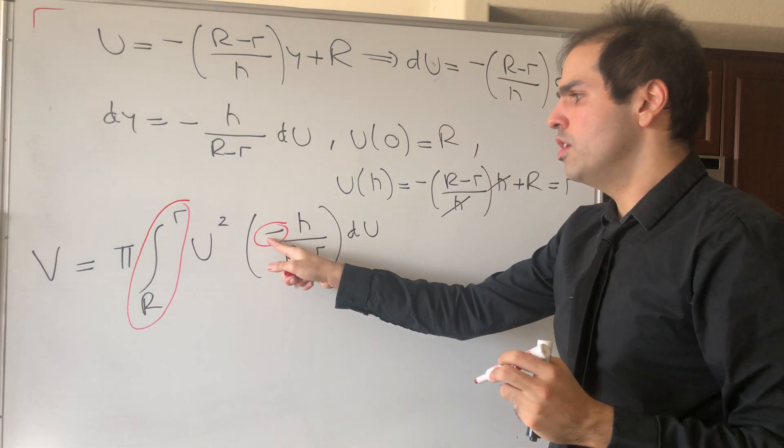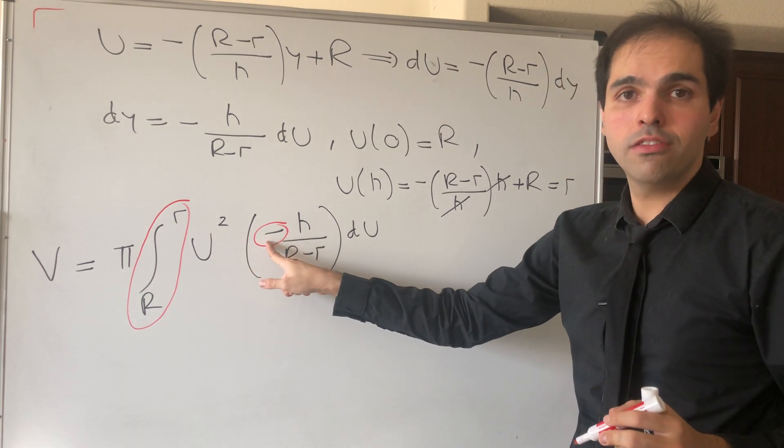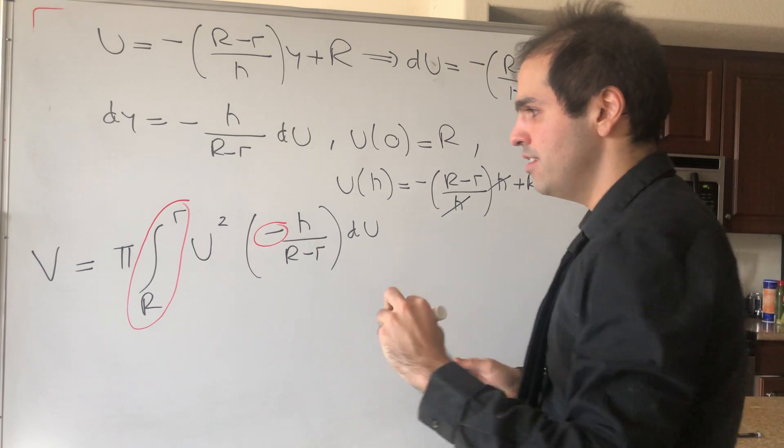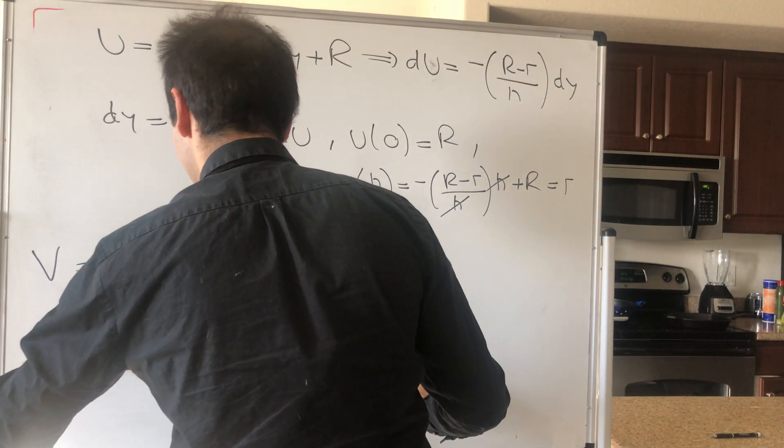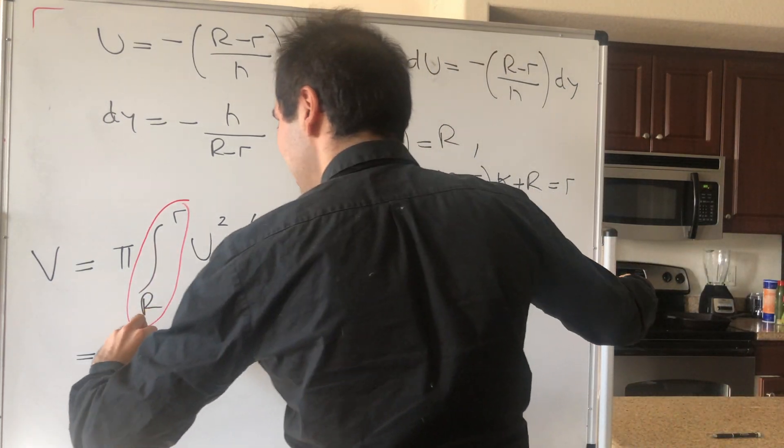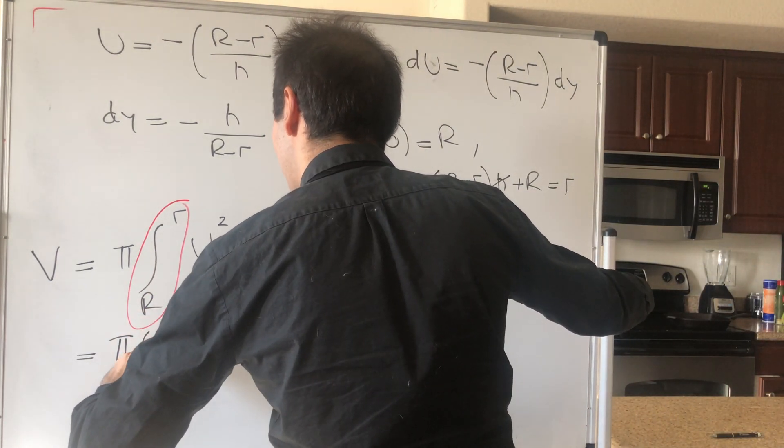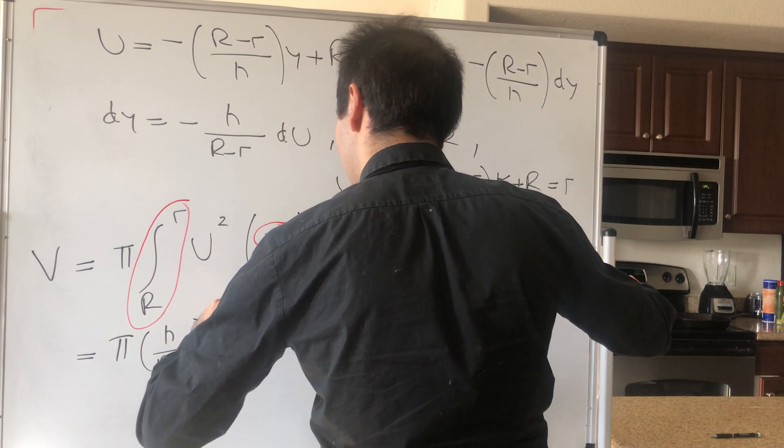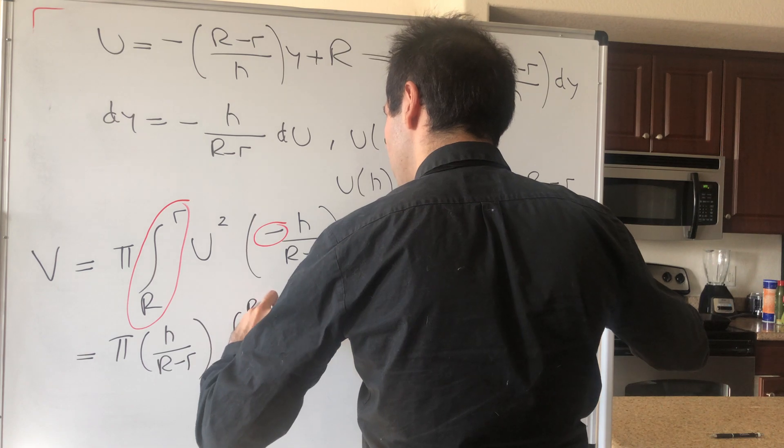So the minus rectifies it, and what you're left with is pi h over (R minus r) and an integral from little r to capital R of u squared du.